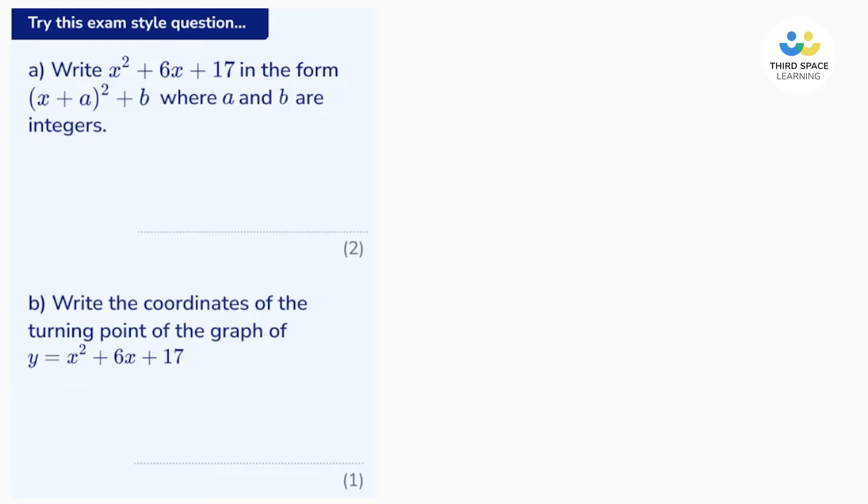So this means we need to write this in the completed square form, and to do that we first need to find the closest perfect square we can. So let's do that by taking the coefficient of x and halving it. So if we half 6 we get 3.